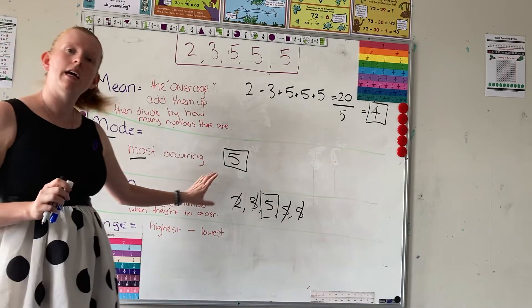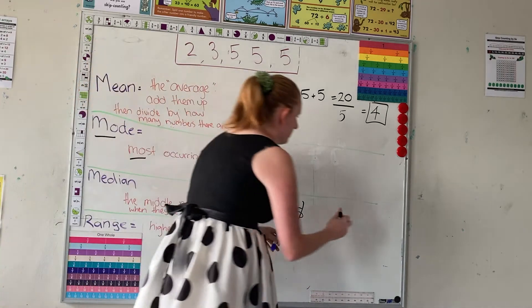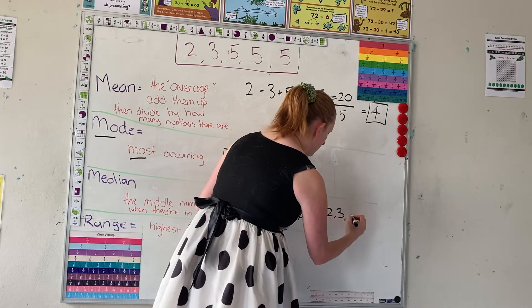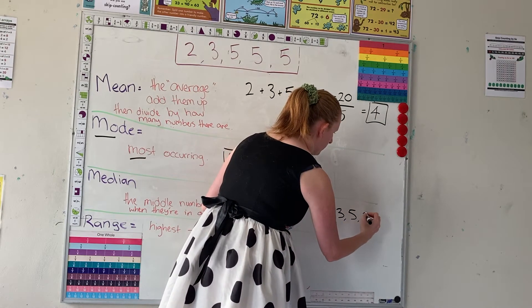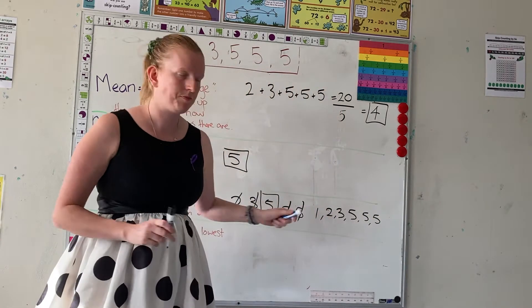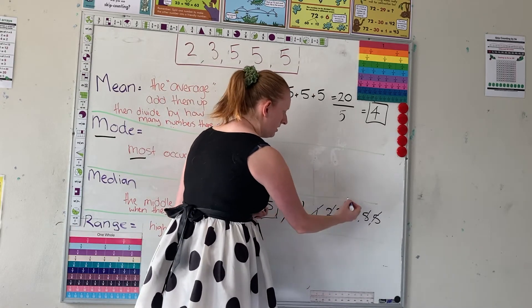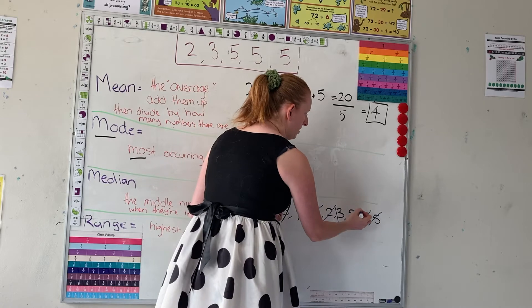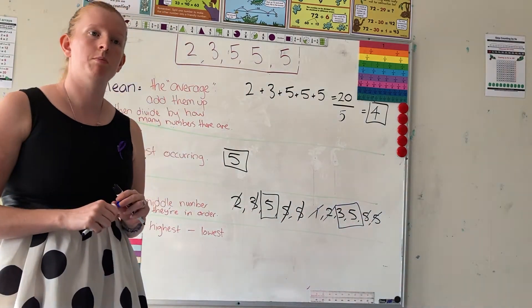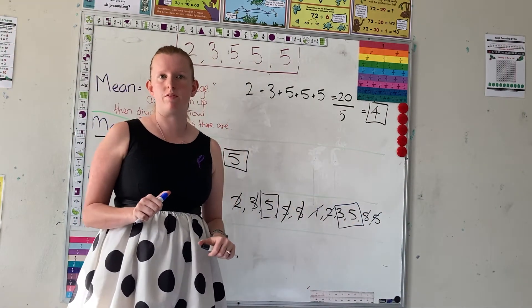Now, if you ever get a set of data where you've got two middle numbers — let's take the same data but put a one in front: one, two, three, five, five, five. I would do the same thing: cross one off at the start, one at the end. But now I'm left with these two numbers. So I need to find a number that is in the middle of those two. Looking at that, I know that the number four is in between three and five.